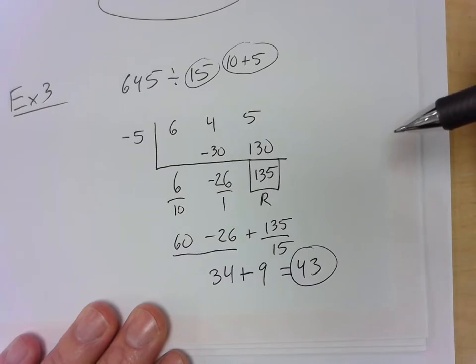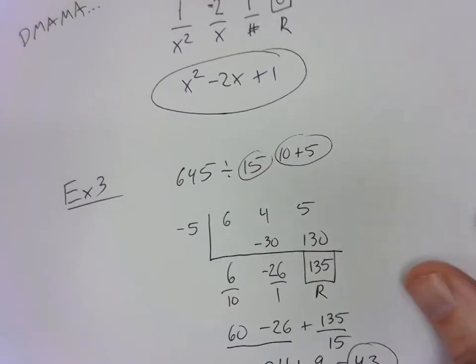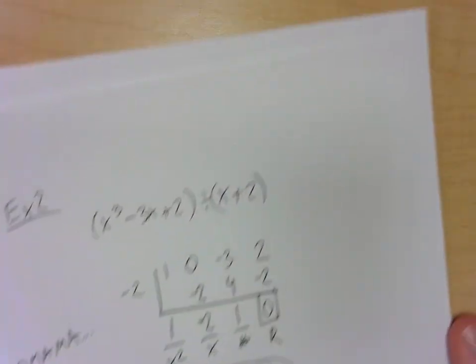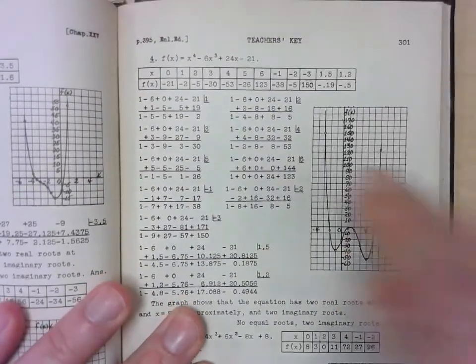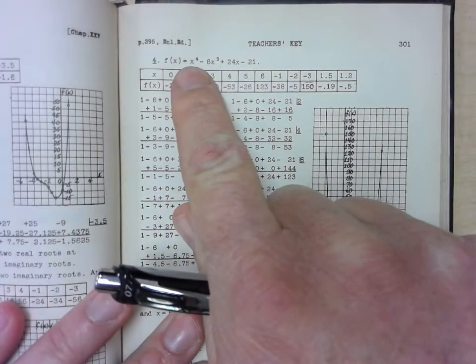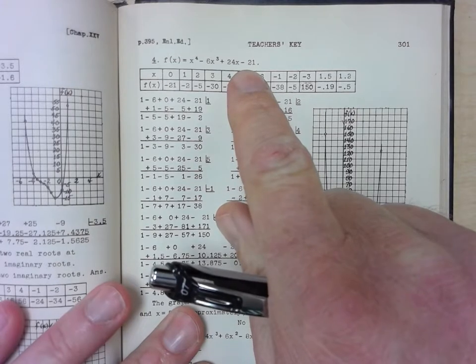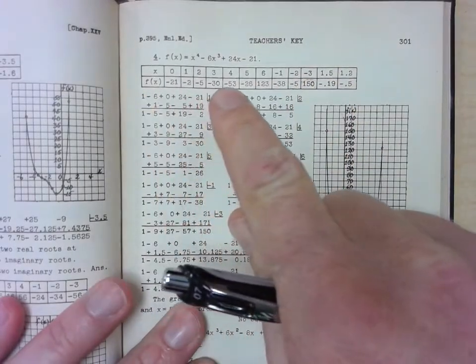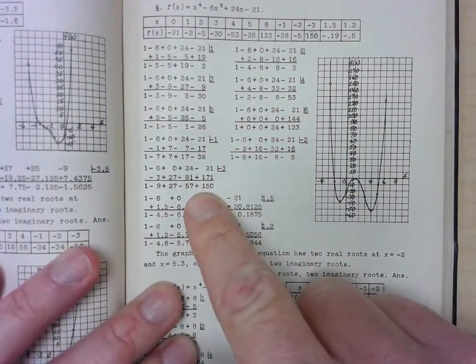Synthetic division can be used to find solutions of polynomials. It can be used to graph. I collect old math books. And I found this in one of my old math book collections. This is a solution to a problem. So, they have x to the 4th minus 6x cubed plus 24x minus 21. And what they did is they came up with all these x values. And then they found the y values or the f of x values. But they found all of the solutions by doing synthetic division and then looking at the remainder.